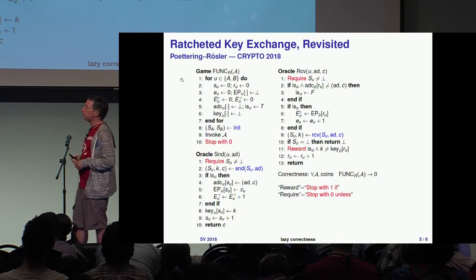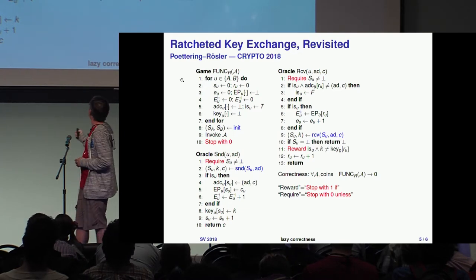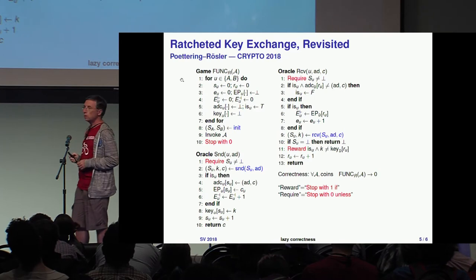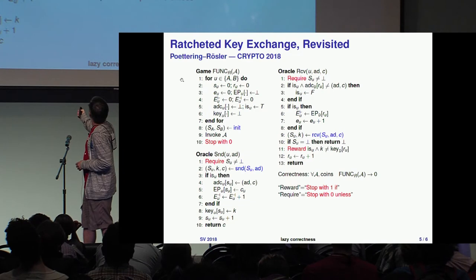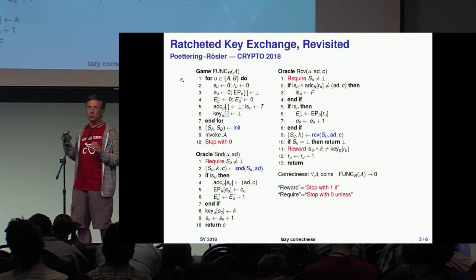So the only way to return one is to reach this line. If you make sure that you never reach it by sending all the state to bottom, you have a lazy cryptosystem which works.